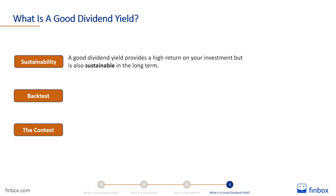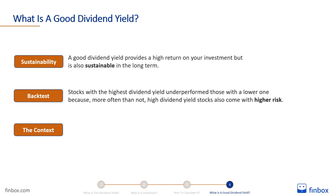In his book, What Works on Wall Street, James O'Shaughnessy divided the entire US stock market into 10 deciles based on dividend yields. The results of his backtest indicated that stocks in the top decile — those with the highest dividend yield — underperformed the second, third, and fourth deciles, those with a lower dividend yield. The reason why? More often than not, high-dividend yield stocks also come with higher risk. Prudent investors need to consider the context around a stock's dividend yield.